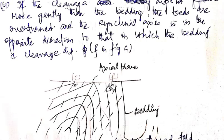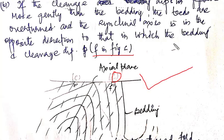In figure C, the cleavage planes are dipping gently relative to the bedding planes. In this case, the syncline will be in the opposite direction to that of the dip. To restate: if the cleavage planes are dipping more gently than the bedding planes, your synclinal fold will be in the direction opposite to that in which your bedding is dipping.